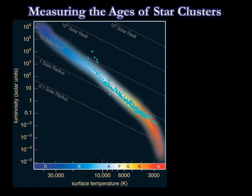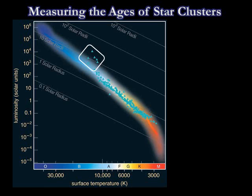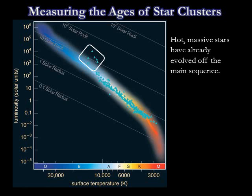Consider the Pleiades. Most of the stars in the Pleiades are on the main sequence, with one exception. At the upper end of the main sequence, stars trail away to the right — it's these stars right here. That means that the hot, short-lived stars of spectral type O are missing from the main sequence.